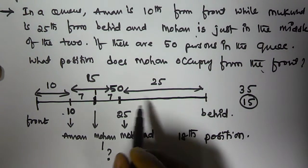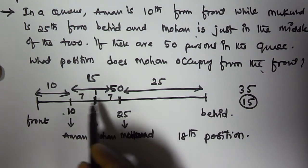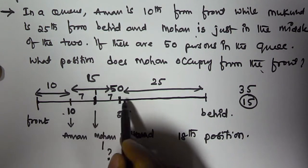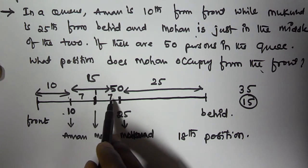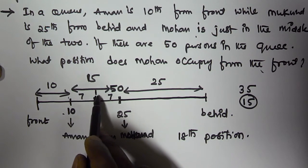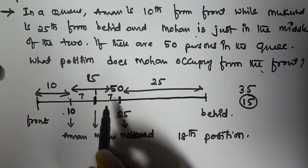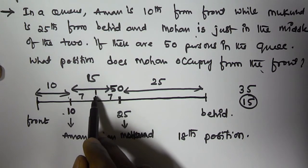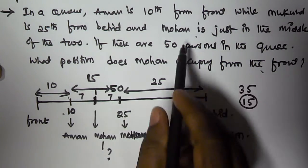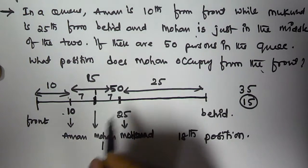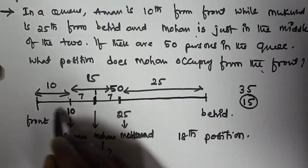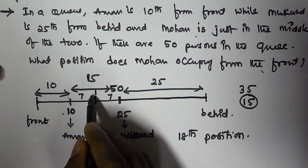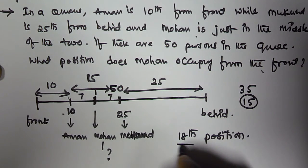So here 10 is there, 25, making 35 total. In between Amun and Mukund, 15 people are there. The 15 can be divided like 7, 1, and 7. So 7 is there on each side, and Mohan occupies that middle position. It is clear from the question he is in the middle of the two — 7 and 7, and the middle 1 is the 8th position. That means 10 plus 7 is 17, plus 1 is 18. So Mohan is at the 18th position from the front.